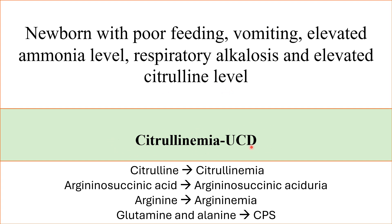If citrulline is elevated, it's citrullinemia. If plasma amino acid shows argininosuccinic acid is elevated, it's argininosuccinic aciduria. Arginine elevated — argininemia. And if glutamine and alanine are elevated, this is a case of CPS.